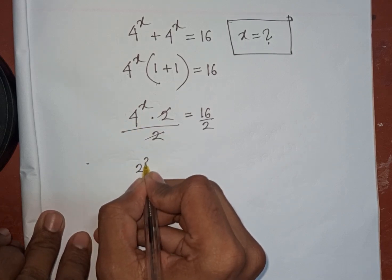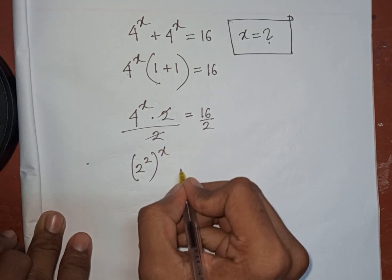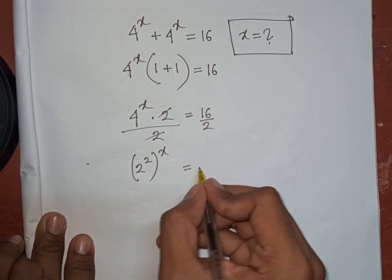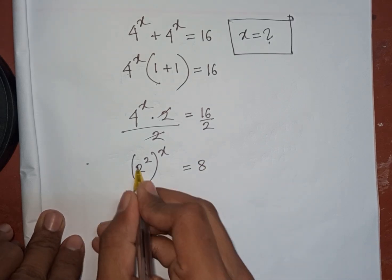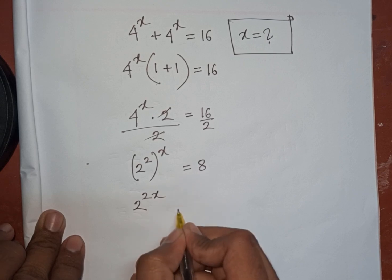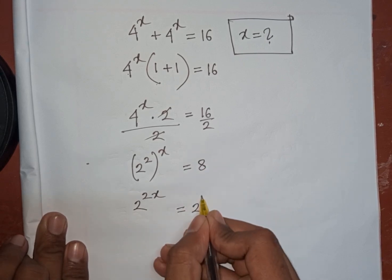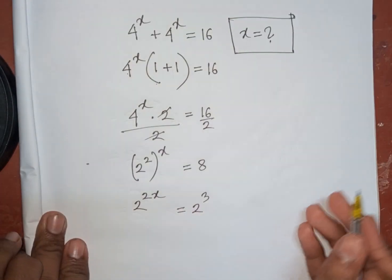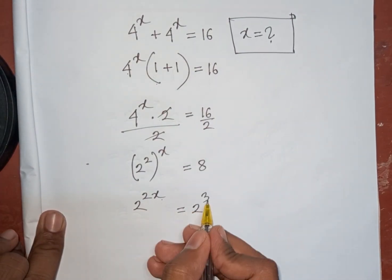Now 4 power x is the same as 2 power 2, then bracket power of x, is equal to 16 divided by 2, that means 8. Now 2 power of 2 times x, that means it will be 2x, is equal to 8, which is the same as 2 power 3. The bases are the same so 2x is equal to 3.